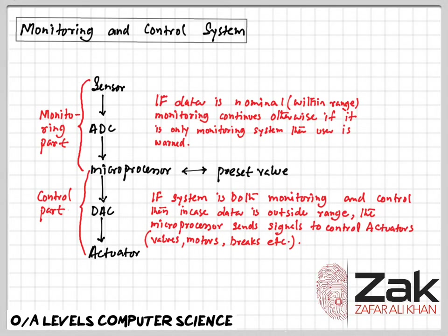If the other wheels are rotating faster, the microprocessor sends a signal to the braking system, which applies pressure to the affected wheel and then reduces it. The wheel's rotation speed is increased to match the other wheels. This checking of rotational speed using the magnetic field sensor is done several times a second, and the braking pressure to all wheels can be constantly changing to prevent any of the wheels locking up under heavy braking.